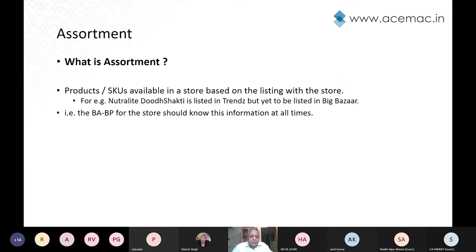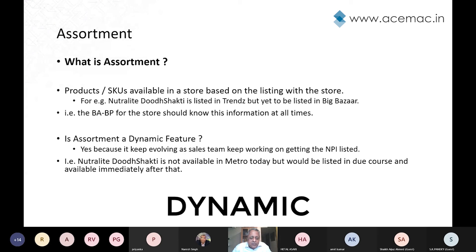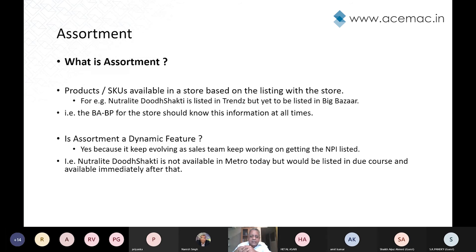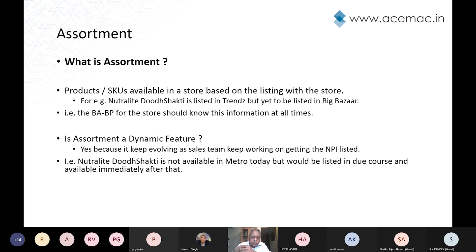The store should know this information at all times. Is assortment a dynamic feature? Dynamic feature ka matlab — it constantly evolves, it constantly changes. Why? Because the sales team, like our ISR, constantly works on getting new products listed. For example, Neutral Light Dhousaki is not available in Metro today, but once it gets listed in due course, it will be immediately available, and it becomes an assortment for Metro for that particular store.